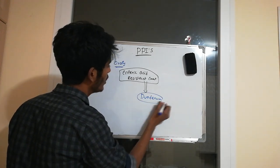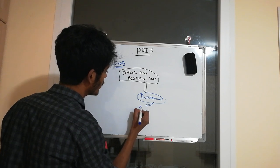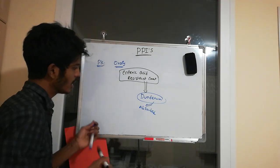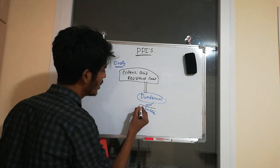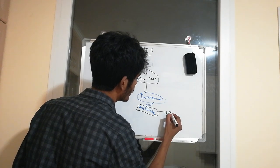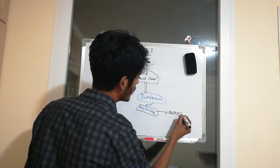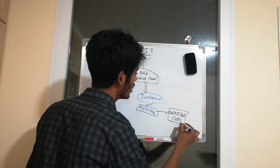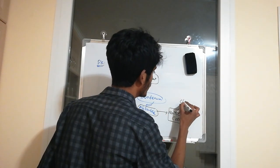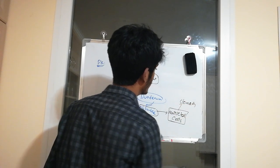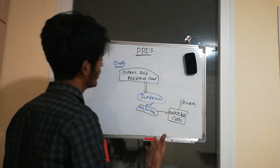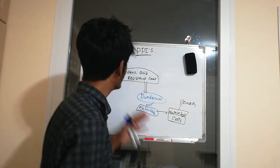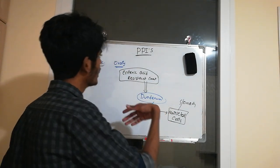After escaping the stomach, the drugs reach the duodenum where they are absorbed. From there, they are transported through the bloodstream to the parietal cells located in the stomach, because parietal cells are responsible for producing acid.